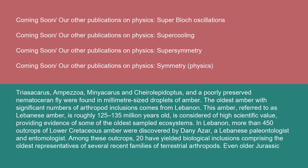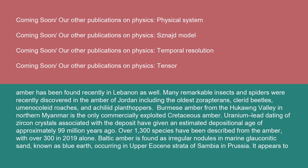Among these outcrops, 20 have yielded biological inclusions comprising the oldest representatives of several recent families of terrestrial arthropods, even older Jurassic amber has been found recently in Lebanon as well. Many remarkable insects and spiders were recently discovered in the amber of Jordan, including the oldest strepsipterans, clerid beetles, umenicollid roaches, and achilid planthoppers. Burmese amber from the Hukong Valley in northern Myanmar is the only commercially exploited Cretaceous amber. Uranium-lead dating of zircon crystals associated with the deposit have given an estimated depositional age of approximately 99 million years ago.